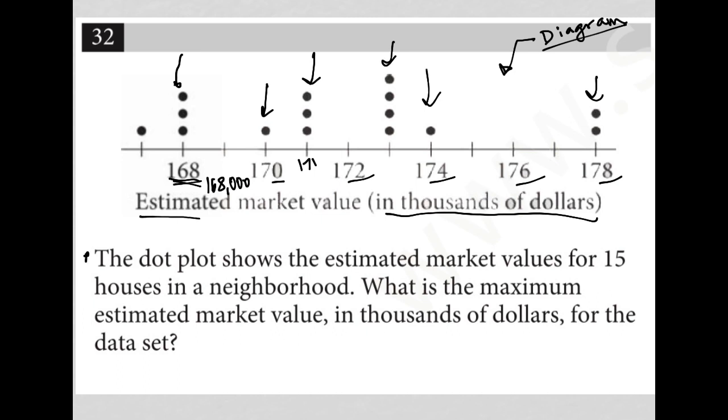So the question here says the dot plot shows the estimated market values for 15 houses in a neighborhood. Okay, so each dot is a house basically. What is the maximum estimated market value in thousands of dollars for the data set?